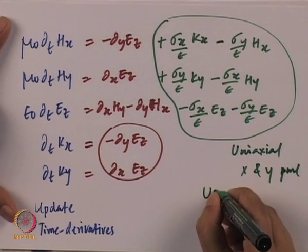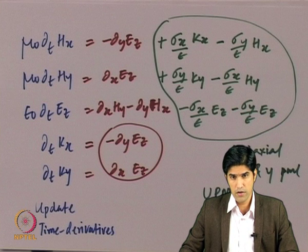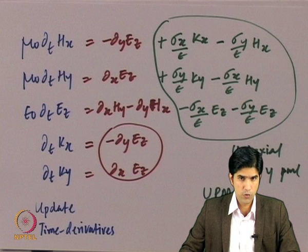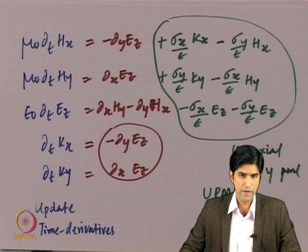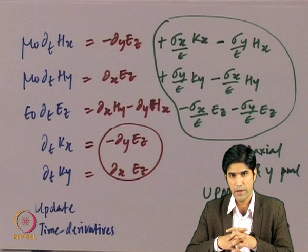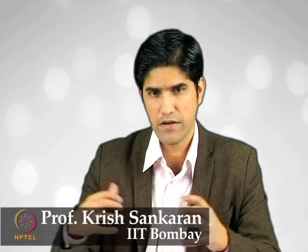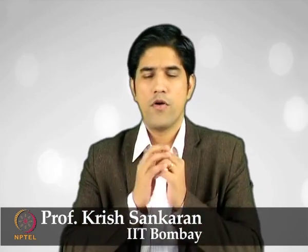This generalized uPML formulation — uniaxial perfectly matched layer — will be our starting point for implementing the PML using the finite difference method in MATLAB. We will test it on a rectangular domain truncated by a PML, simulate a sinusoidal point source impinging on a perfect electric conductor scatterer, and observe how the x and y oriented PMLs absorb the scattered radiation in all directions. This modeling exercise will be covered in the next module.